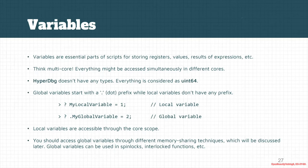For example, the first example assigns myLocalVariable to 1, which is a local variable. The second one starts with a dot, so it assigns 2 to myGlobalVariable. As I mentioned before, local variables are accessible through the core scope, but global variables are available through all of the cores.